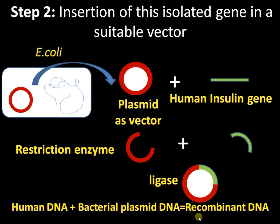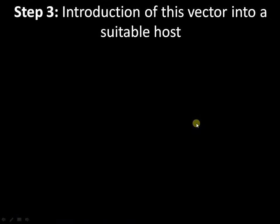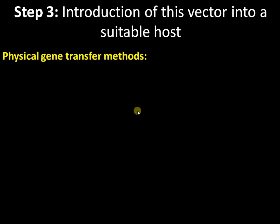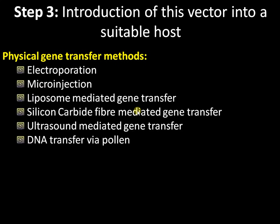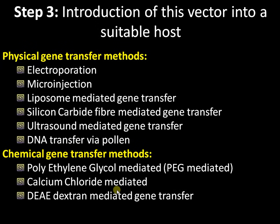Step 2 is complete. We have inserted our human insulin gene into a vector. Now for step 3: introduction of this vector into a suitable host. There are different gene transfer methods, including electroporation, microinjection, liposome-mediated gene transfer, and silicon carbide fiber method.